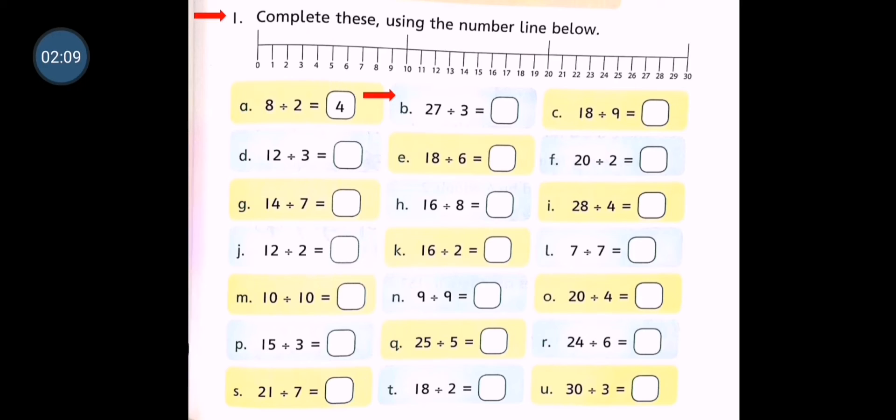27 divided by 3. You have to see where 27 comes in table of 3. It means how many times 3 is 27. Okay, now read the table of 3 with me.